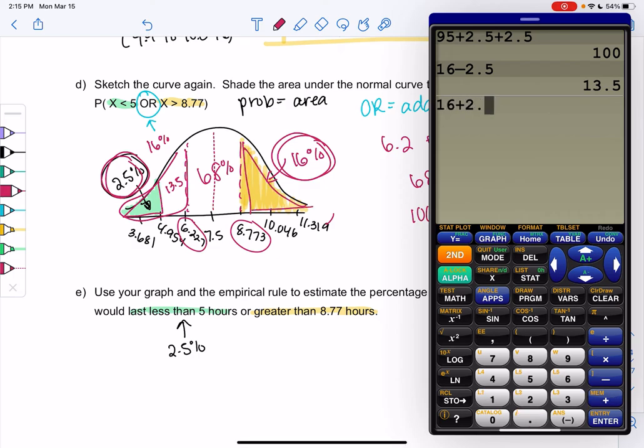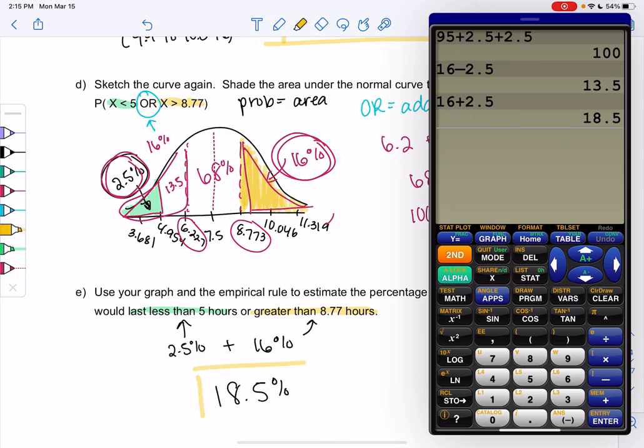And we'll just add them up. Because or means add them up. So it'll be 2.5% plus 16%. So 18.5% would be either category. And that's it. So drawing the curve is super important in this section. So make sure you always draw the curve and label the three standard deviations in both directions.